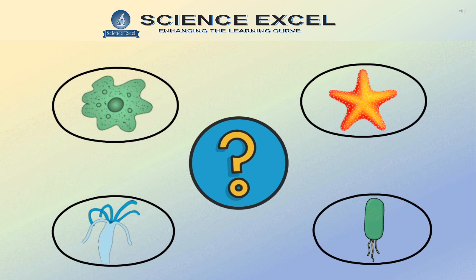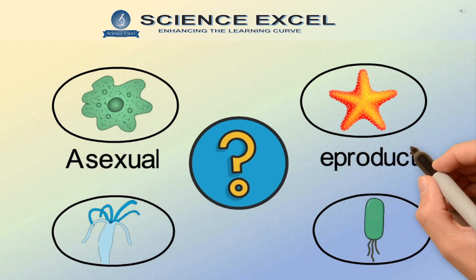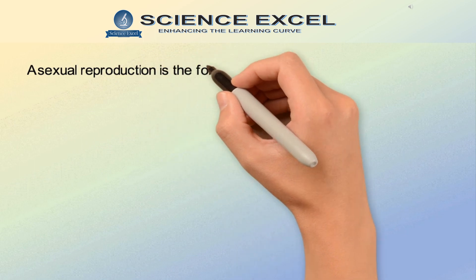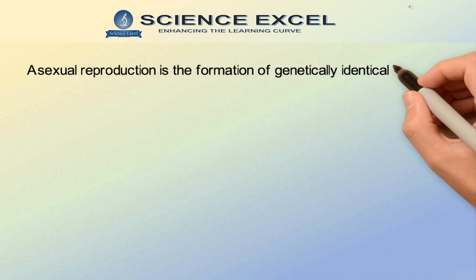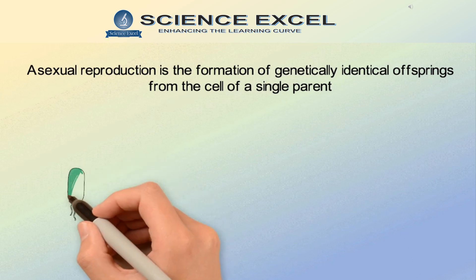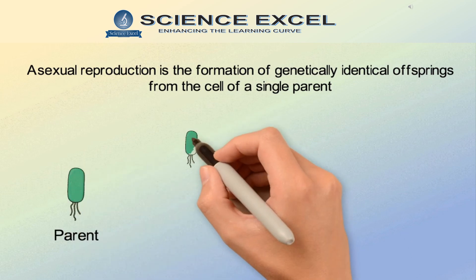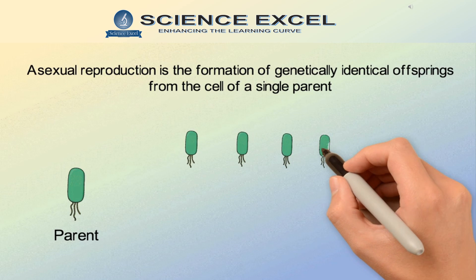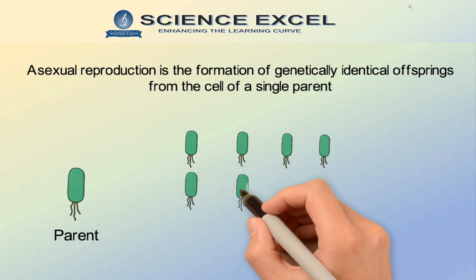This method of reproduction by a single organism is called asexual reproduction. Asexual reproduction is the formation of genetically identical offsprings from the cell of a single parent. Since there is only one organism involved, there is no fusion of gametes and no mixing of genetic information.